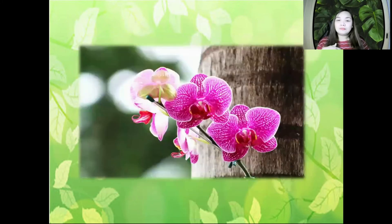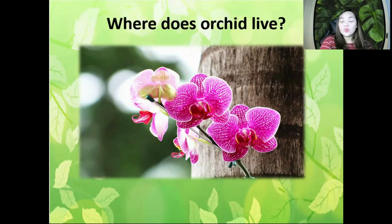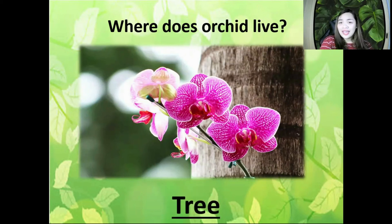Next, can anyone guess what plant it is? It starts with the letter O. It is orchid. So where does orchid plant live? Orchid plant lives on trees. Yes, they live on trees.